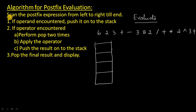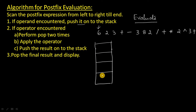So what is the first step? Scan the expression from left to right till the end. So start from the left. We have first the operand — 6 is an operand. So whenever you have an operand, directly push it onto the stack. The next one is again an operand, so push it onto the stack. And the next one is again an operand, so push it onto the stack.